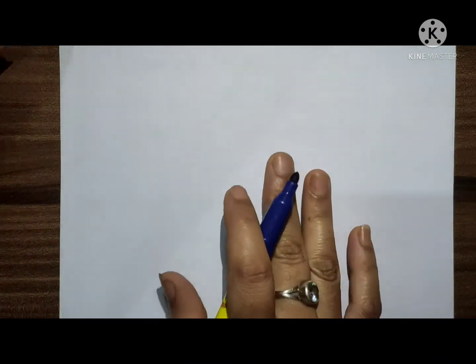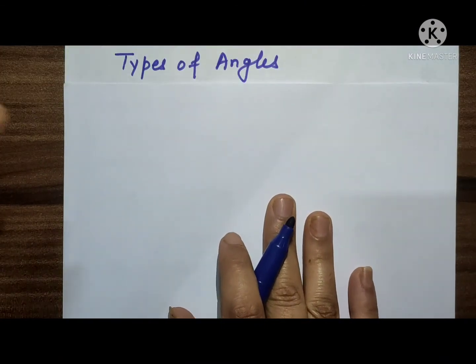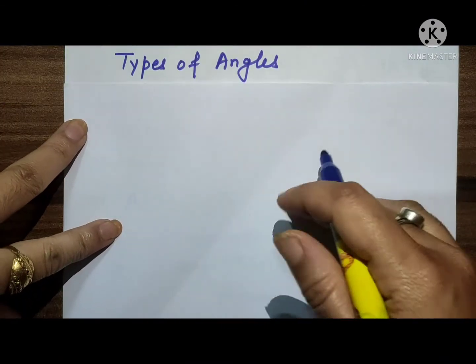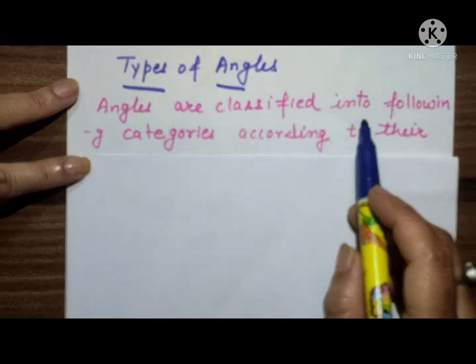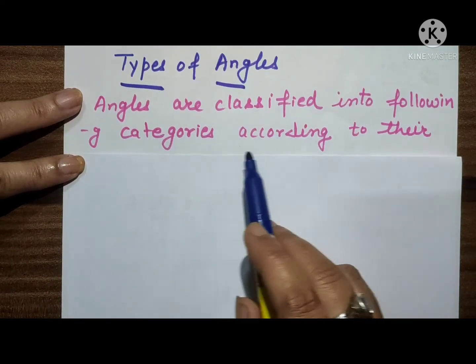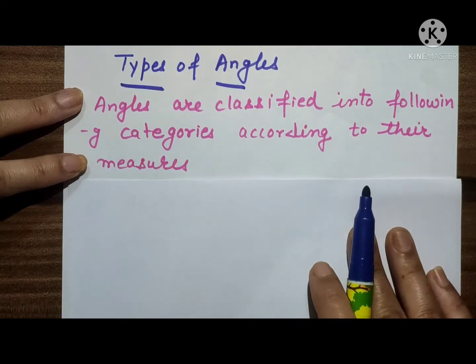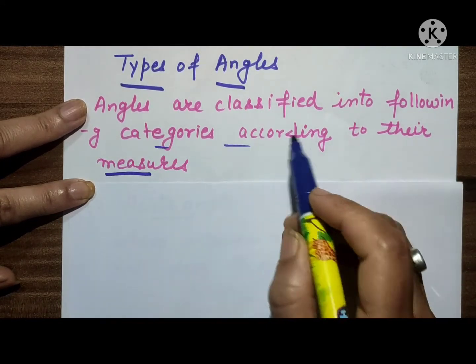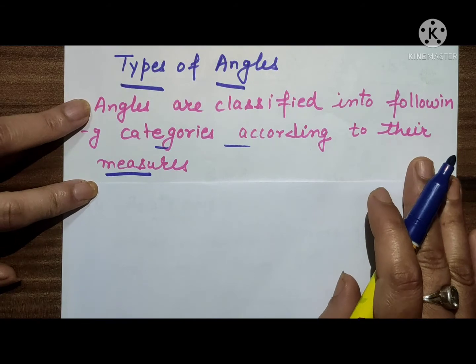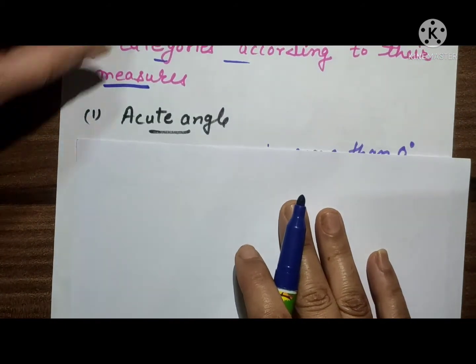Good morning dear students. Today's topic is types of angles. Angles are classified into the following categories according to their measures. We will discuss the types of angles according to their measures.